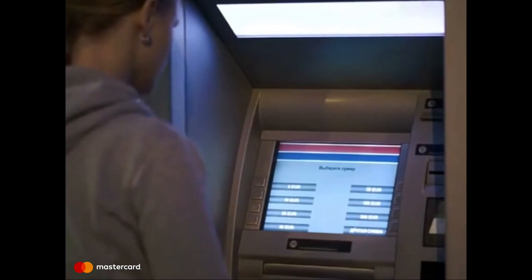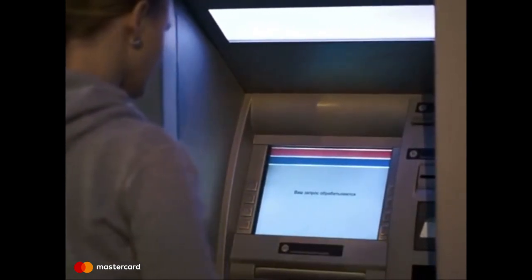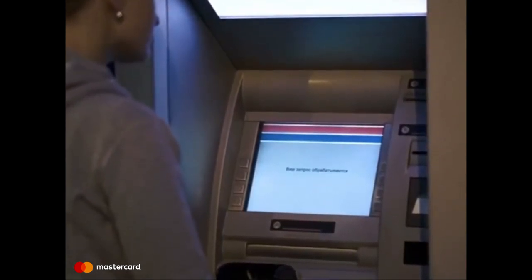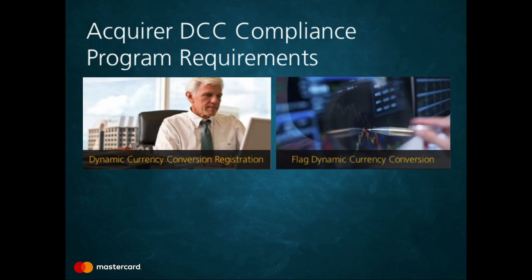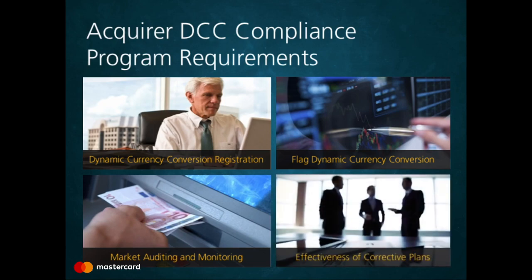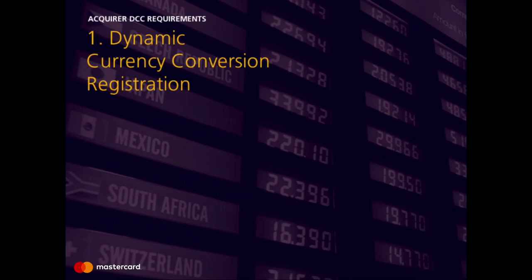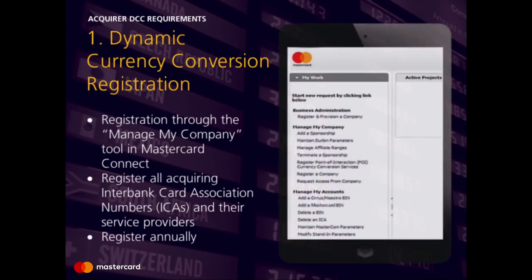Now that you understand the DCC process as it pertains to the cardholder, we will provide an overview of the DCC process as it pertains to the acquirers. MasterCard has four key requirements for acquirers offering DCC: registration, data elements, successful audits, and effective action plans. The first requirement is registration. MasterCard requires that all acquiring Interbank Card Association numbers, or ICAs, that are to be used to offer DCC, first be registered via the Manage My Company tool in MasterCard Connect.